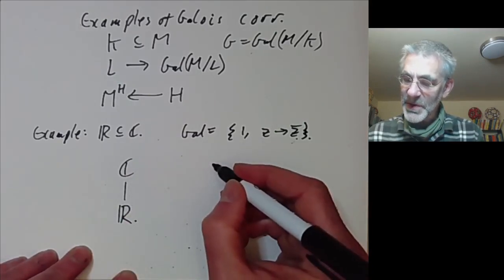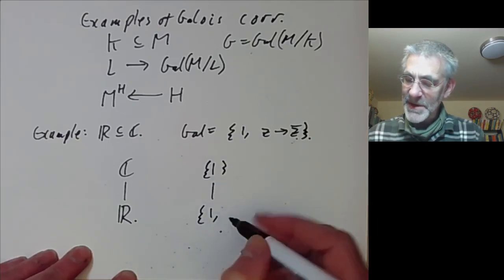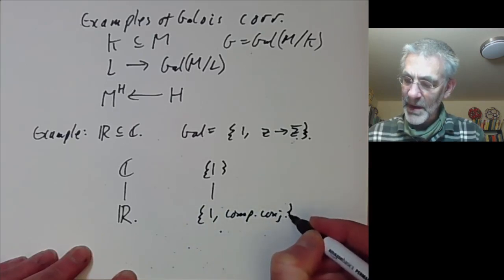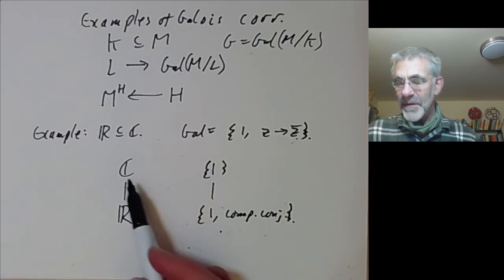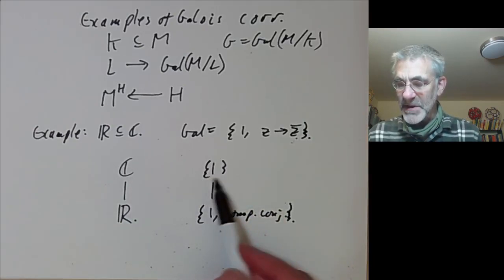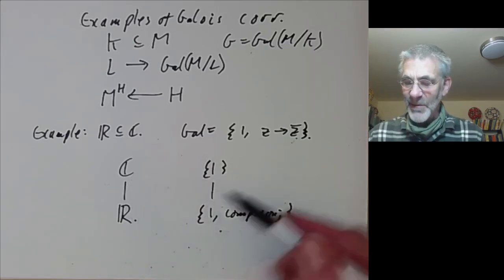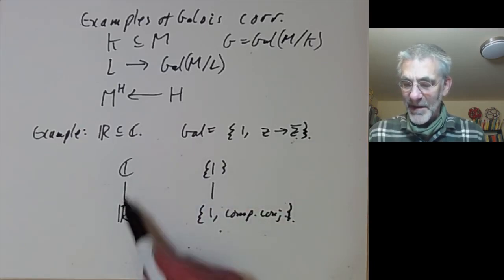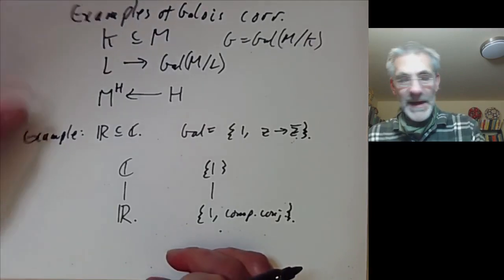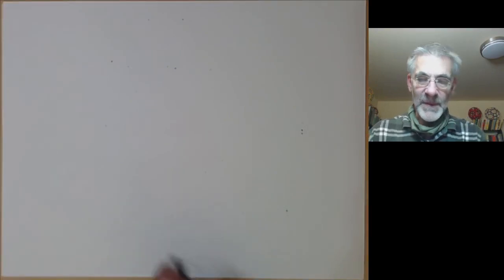The complex numbers correspond to the trivial subgroup and the real numbers correspond to the subgroup containing the identity and complex conjugation. The only thing to watch out for is that the larger field corresponds to the smaller subgroup — this is one of the biggest sources of errors in Galois theory, thinking the bigger field should correspond to a bigger subgroup.